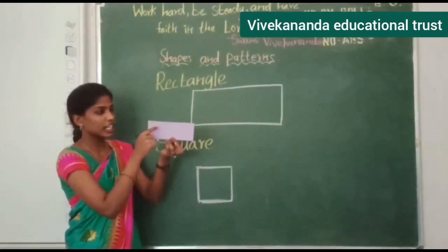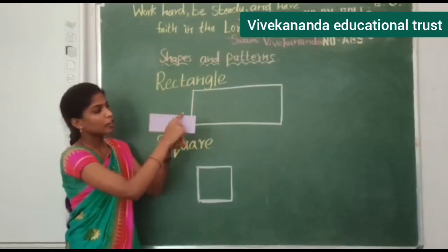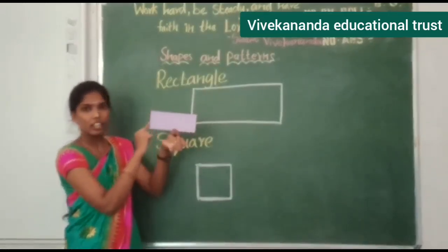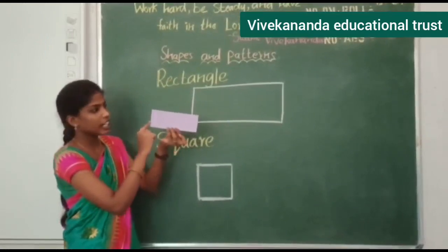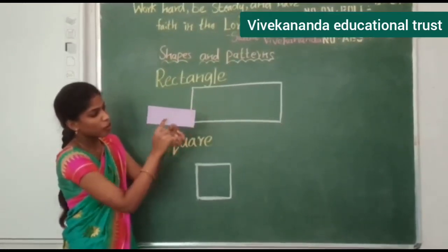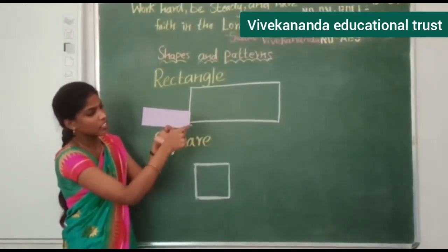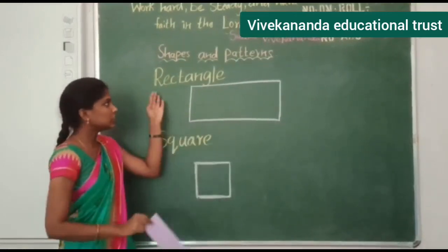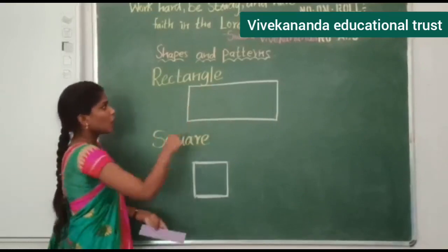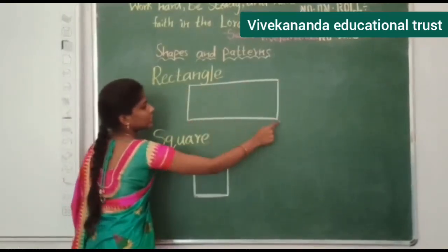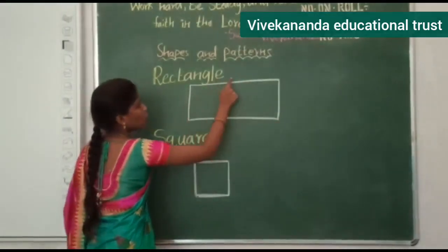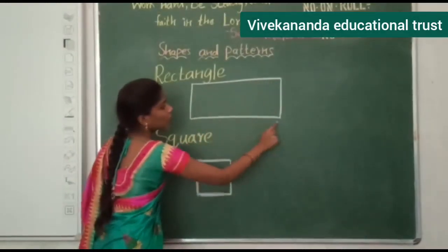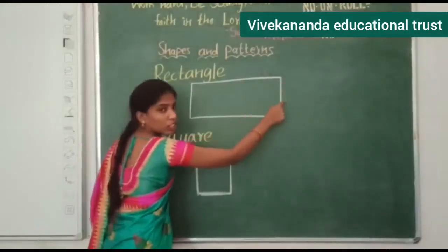For rectangle, it has four corners and four sides. Two sides are long and two sides are short. This is the long side, and this is the short side.